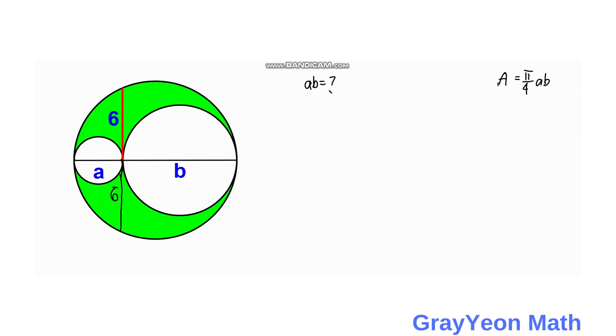So using the cross-chord theorem we have A times B is equal to 6 times 6. So AB is equal to 36.